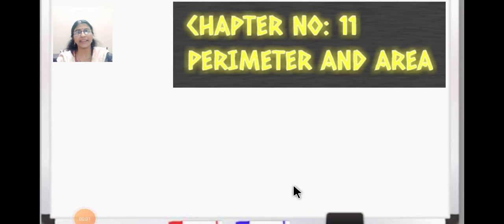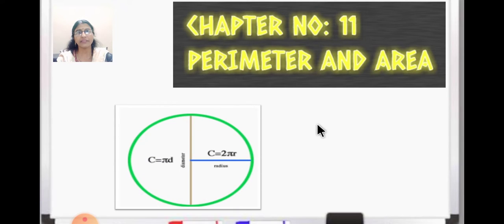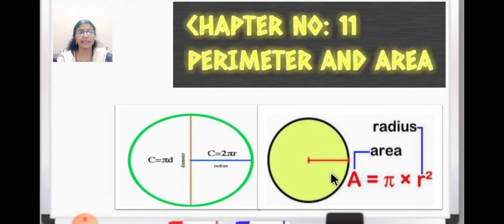Hello students, it's Sairam. Let us continue with the same chapter, chapter number 11, Perimeter and Area. Today we will do some more sums based on circumference of a circle and area of a circle.